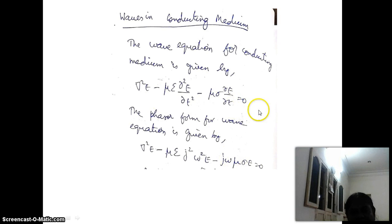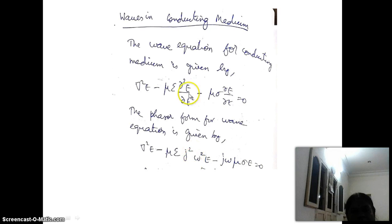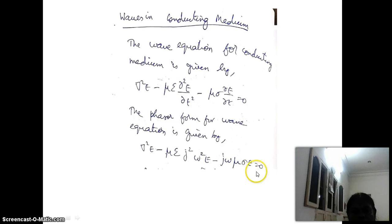When we represent this equation in phasor form, as usual, the partial derivative with respect to t can be written as j omega, and the second partial derivative with respect to t squared is replaced with (j omega) squared. So we can write: del squared E minus mu epsilon times j squared omega squared E minus j mu sigma j omega E equals zero. This is the phasor form representation.